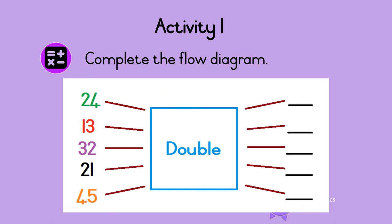What is double 24? Let's do this together. First double the first digit. So double 2 is 4. Then double the second digit. So double 4 is 8. So double 24 is 48. Easy, hey?